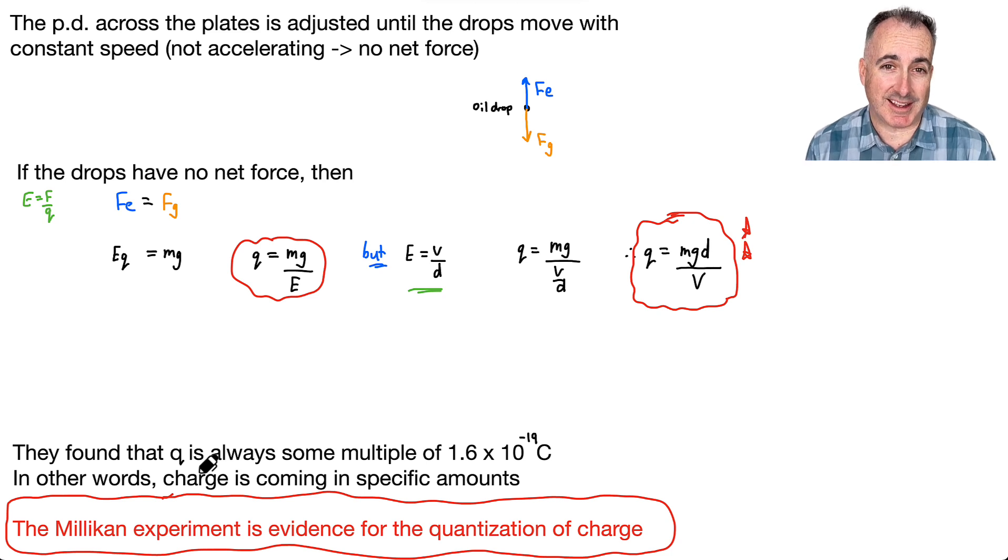We mean that charge always comes in multiples of this 1.6 times 10 to the minus 19 Coulombs. And now we actually call that e. Now that's called the charge of an electron. So this little value right here, actually we call this e. And if you look it up in your data book, that's what it says. e is equal to 1.6 times 10 to the minus 19 Coulombs.